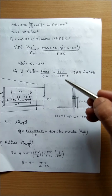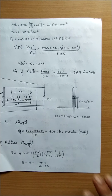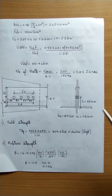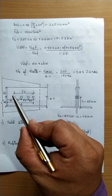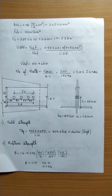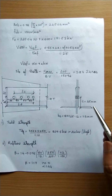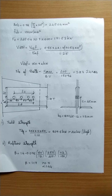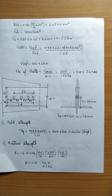Number of bolts = ultimate force / bolt value = 600 / 150.94 ≈ 3.97, so we provide 4 bolts. The four bolts are placed in a single row with an edge distance of 40 mm, pitch of 50 mm, and c-value of 45 mm (from SP6).